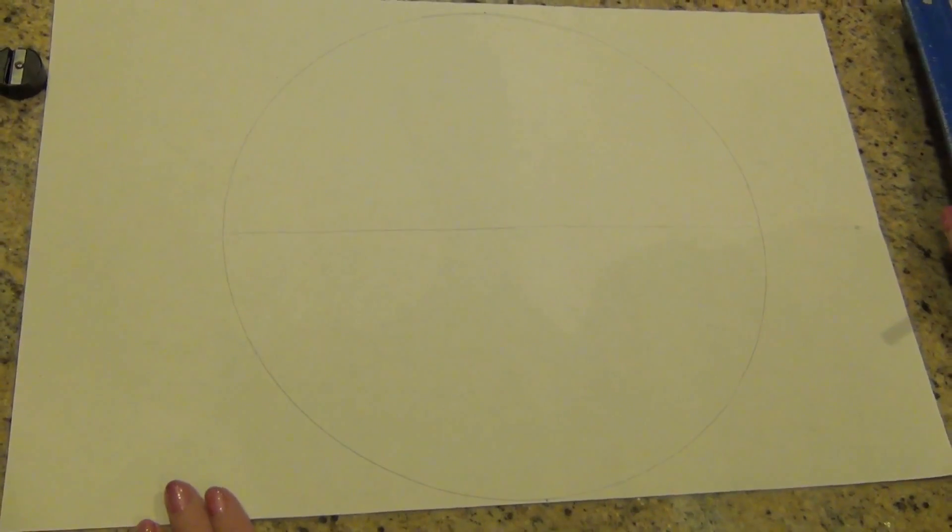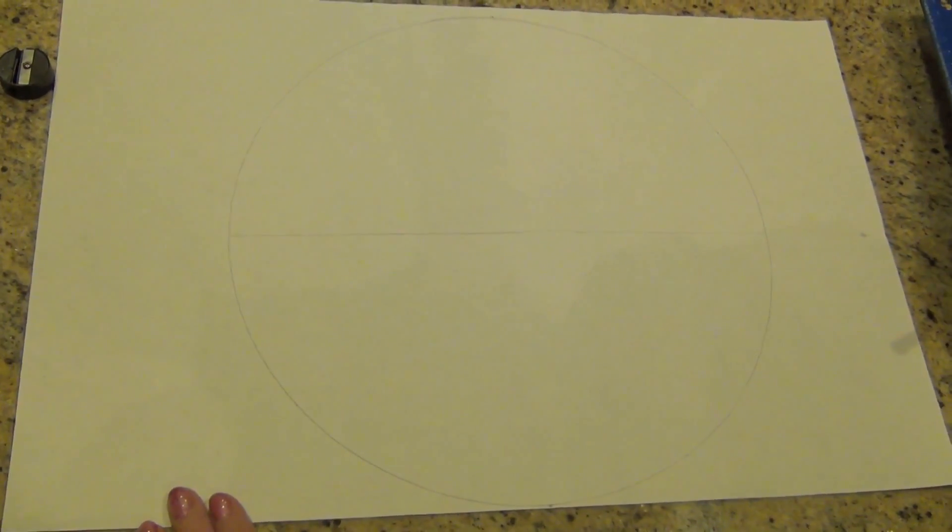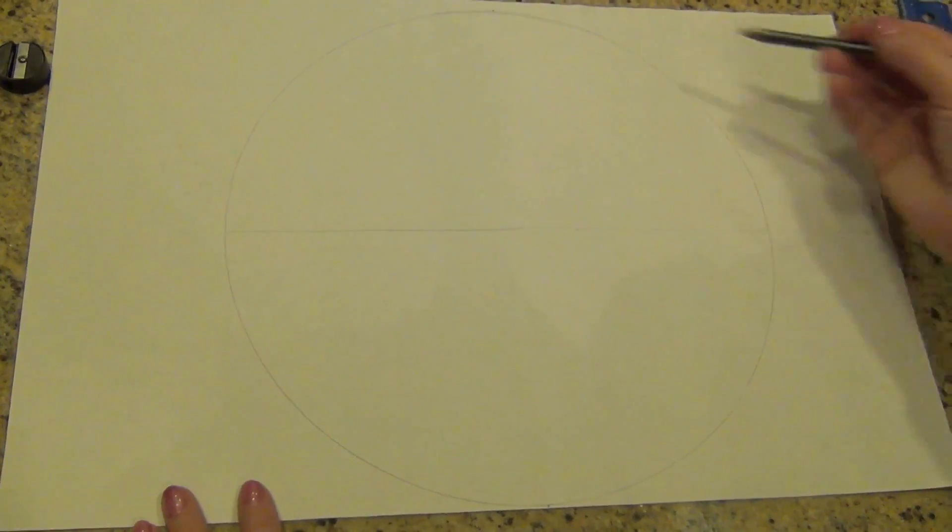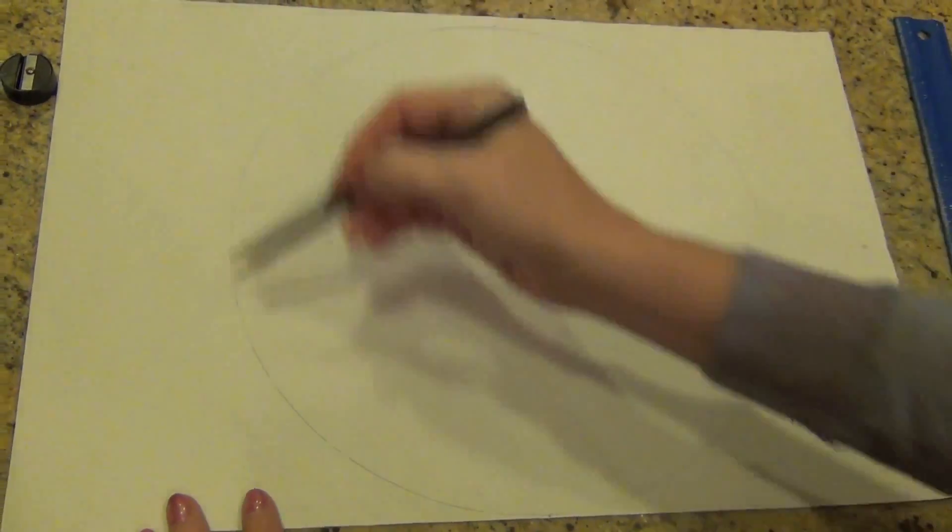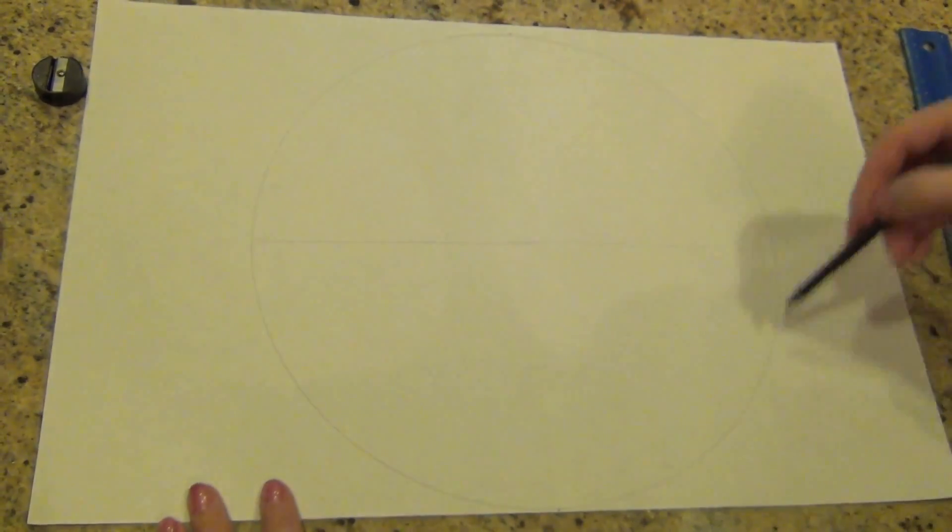Welcome. I want to go over the steps for making a color wheel, which is the first part of your color project. So I've started by tracing a circle. I used a plate. You can draw the circle freehand. It's fine if it's not perfect, or you can just trace something.